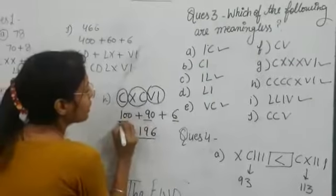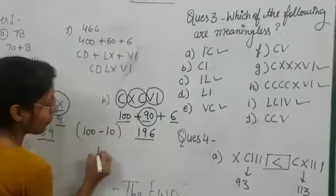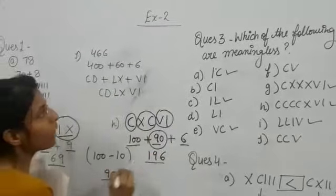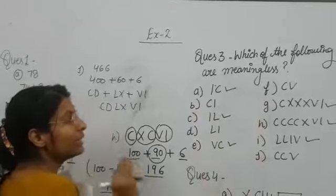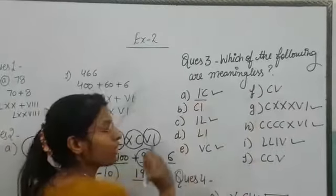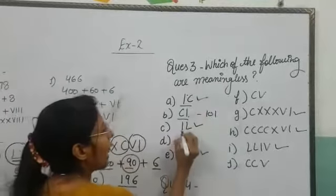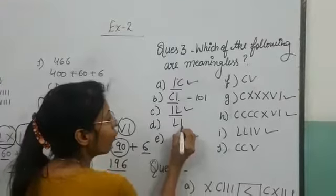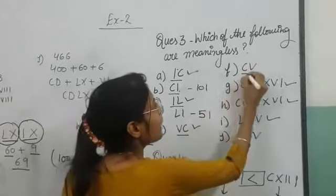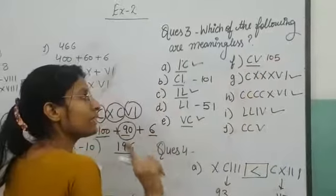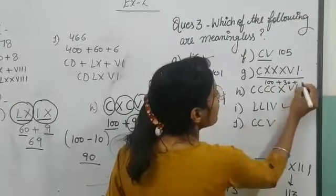So I have to explain question 4. Which of the following are meaningless? This means we have minus 10, 90. This one: 100 plus 30 plus 6, 136.